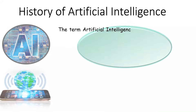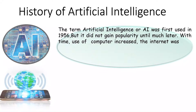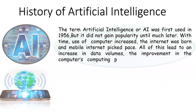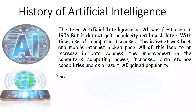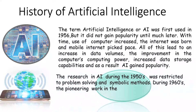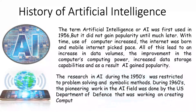The term Artificial Intelligence, or AI, was first used in 1956 but did not gain popularity until much later. With time, use of computers increased, the internet was spawned, and mobile internet picked pace. All of this led to an increase in data volumes, improvement in computing power, and increased data storage capabilities — and as a result AI gained popularity. Research in AI during the 1950s was restricted to problem solving and symbolic methods. During the 1960s, pioneering work in AI was done by the US Department of Defense, working on creating computers capable of acting like human beings.